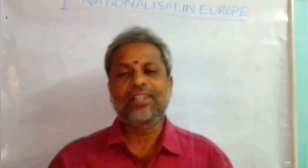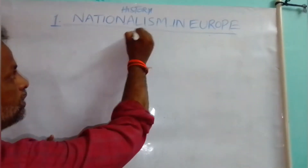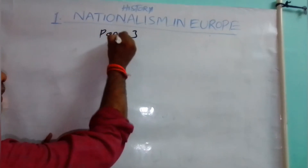Hello students, good morning. In this video we are going to explain Nationalism in Europe, Part Three. In the last video we explained the French society which comprised three groups: the first, second, and third estates — how the first and second estate people harassed the third estate common people. Now we are going to see Part Three of the lesson Nationalism in Europe.